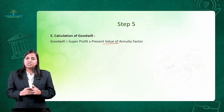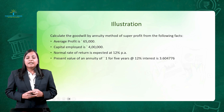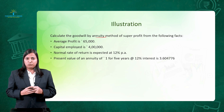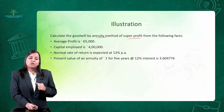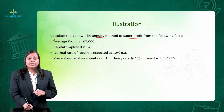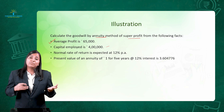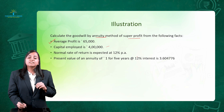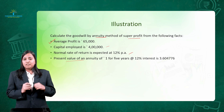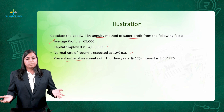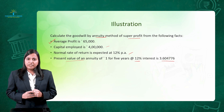Let's understand using an illustration. The question says: calculate goodwill by the annuity method of super profit on the following facts. First, average profit is given. Second, capital employed is given — sometimes this number is directly given, sometimes you need to calculate it using the liability or asset approach. Third, NRR is given for calculation of normal profit. Lastly, the present value annuity factor at 12% interest is 3.604776.